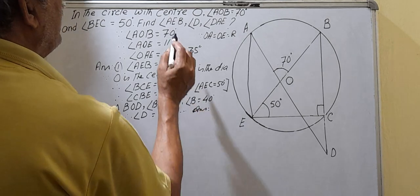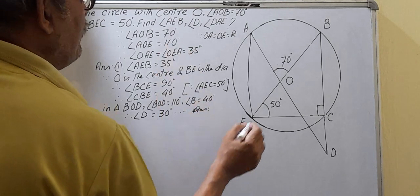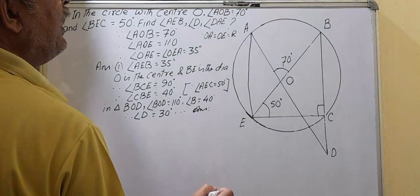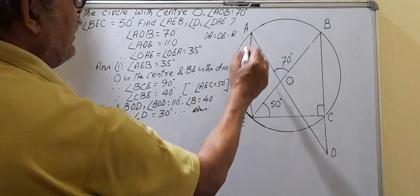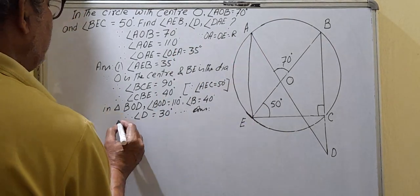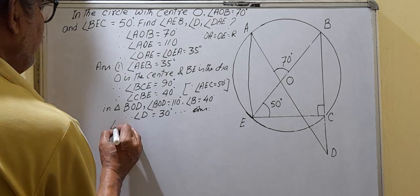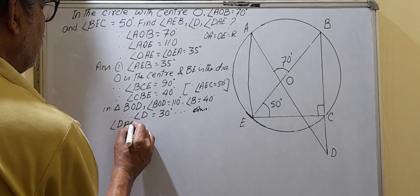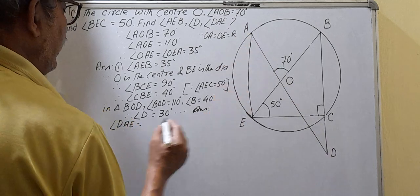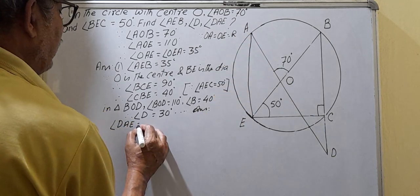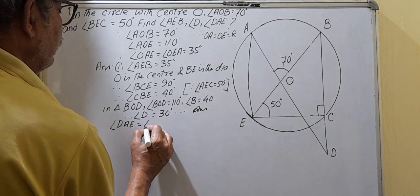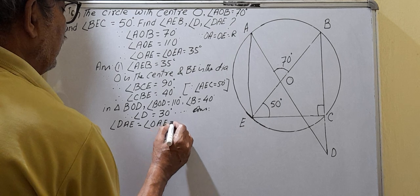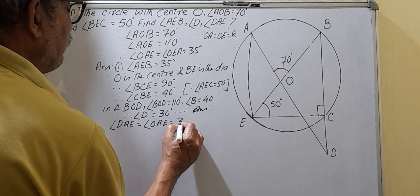Now for angle DAE: angle DAE = angle OAE = 35 degrees. So the second answer is angle DAE = 35 degrees.